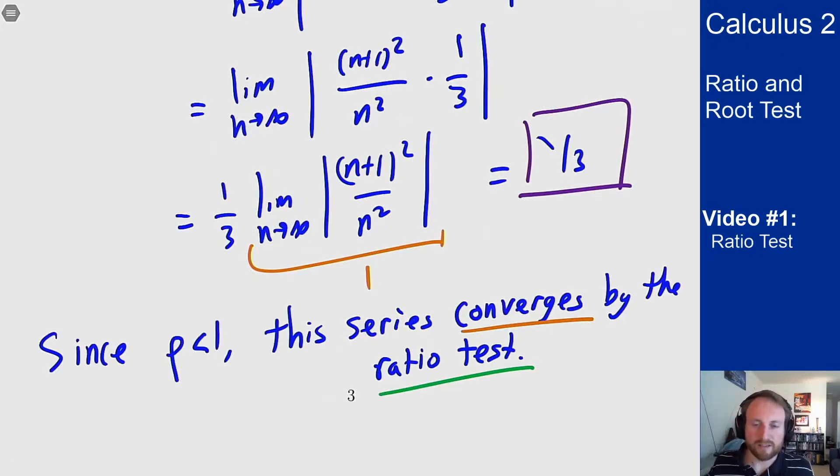And that's the idea of how the ratio test works. You set up this appropriate limit of the ratio of consecutive terms with an n and n+1 in them. You then plug in your terms, you do some manipulation, you cancel some fractions, move stuff around and then you compute the limit.